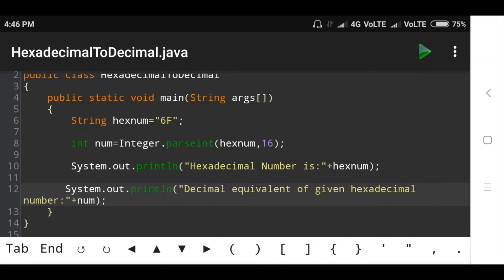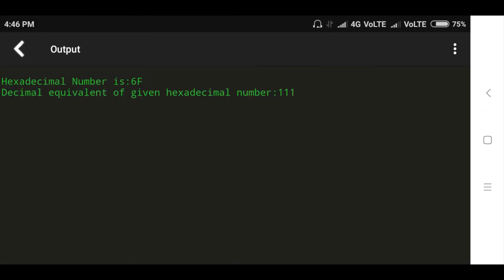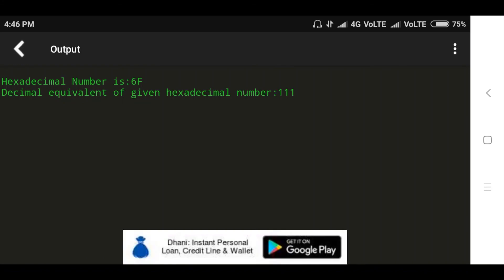Now let's run the program and see the output. Hexadecimal number is 6F, then decimal equivalent of given hexadecimal number is 111.